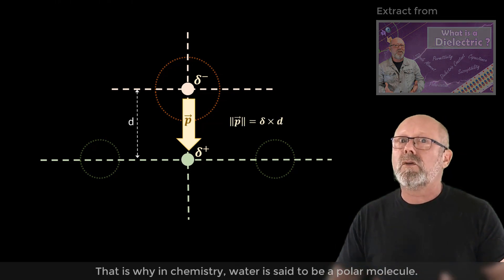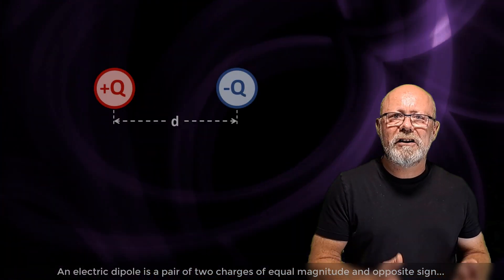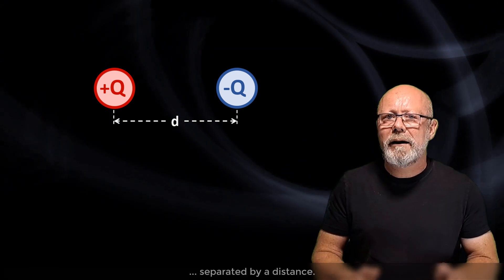That is why in chemistry, water is said to be a polar molecule. An electric dipole is a pair of two charges of equal and opposite sign separated by a distance.